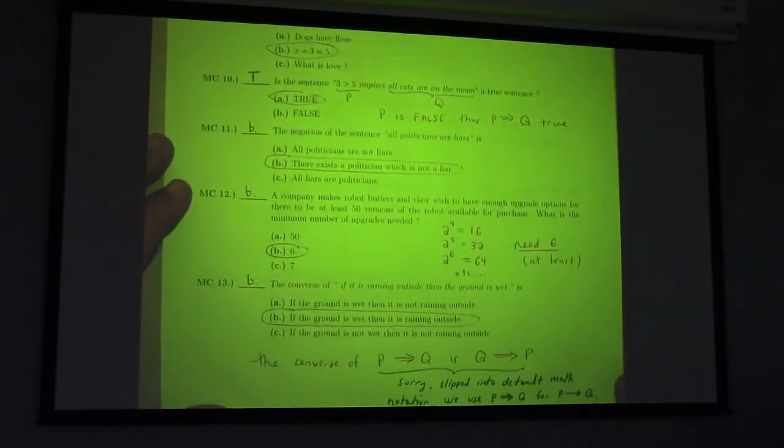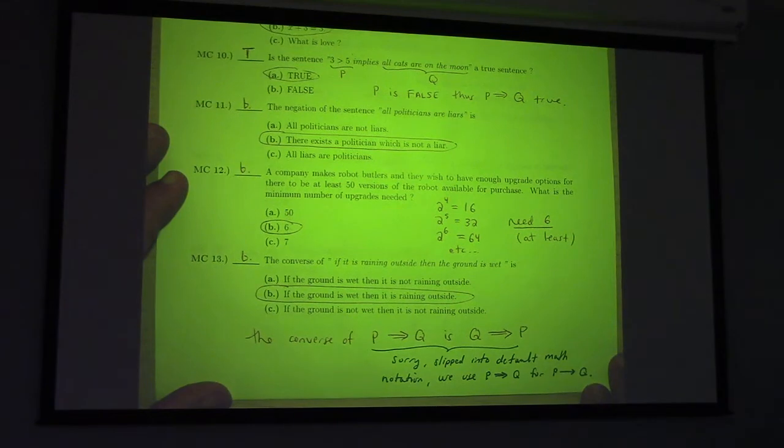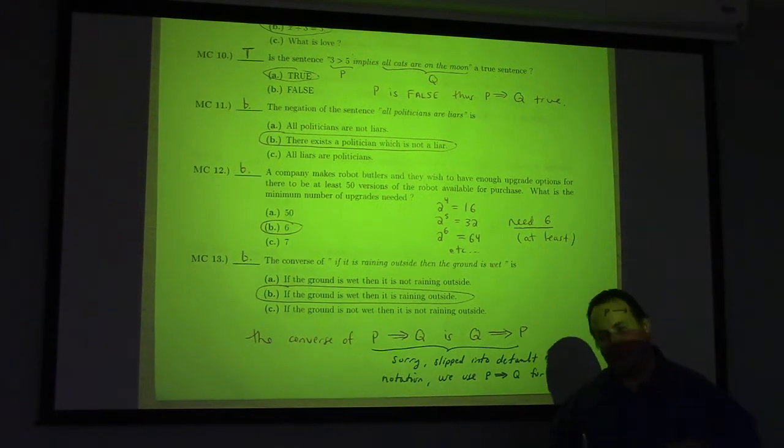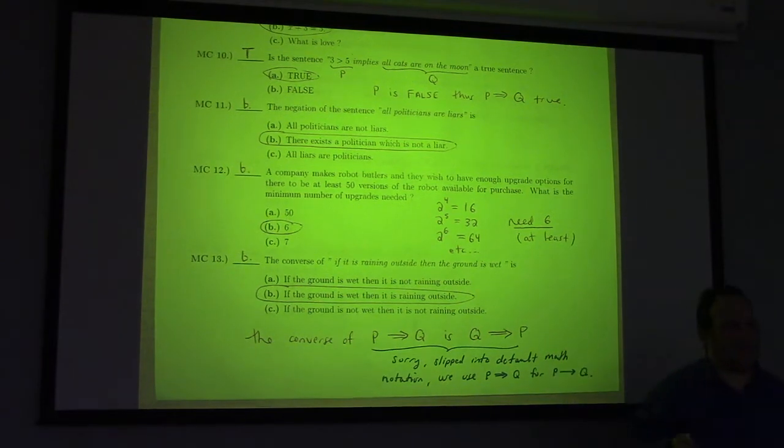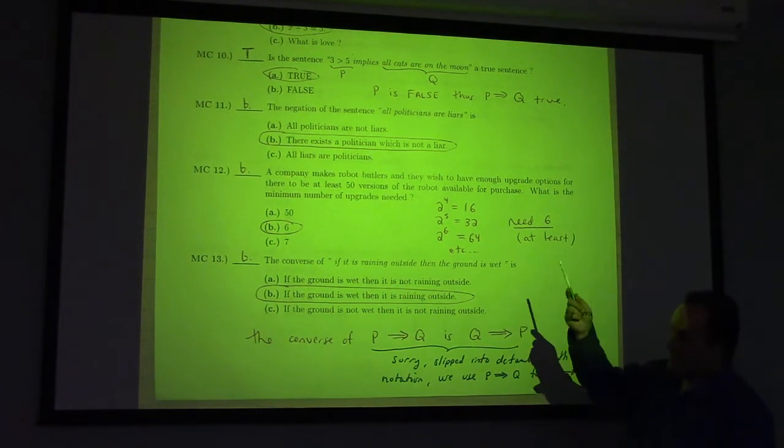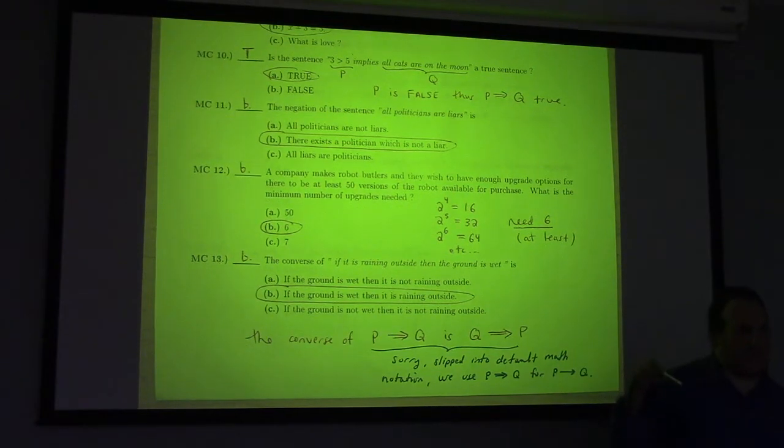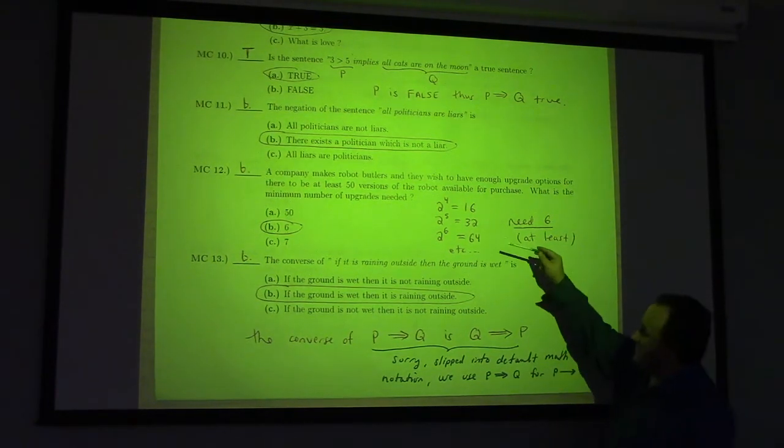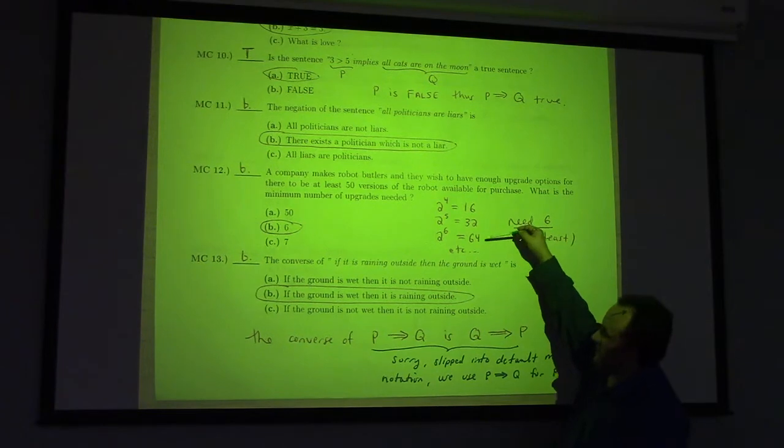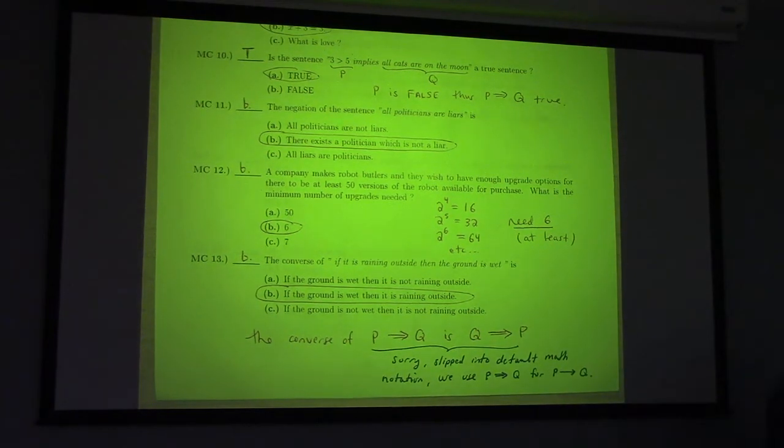Number 12, I've given you a question about robot butlers. So, this is just another way of asking, like, one of the questions in your homework about sandwiches or upgrade options on a house. So, you have a company that makes robot butlers, and so to get 50 versions, we need enough options so that 2 to that number of options is larger than 50. 2 to the 4 is 16, 2 to the 5 is 32, 2 to the 6 is 64, so we need at least 6, right? At least 6 options will get you all the robot butlers that you want to sell.